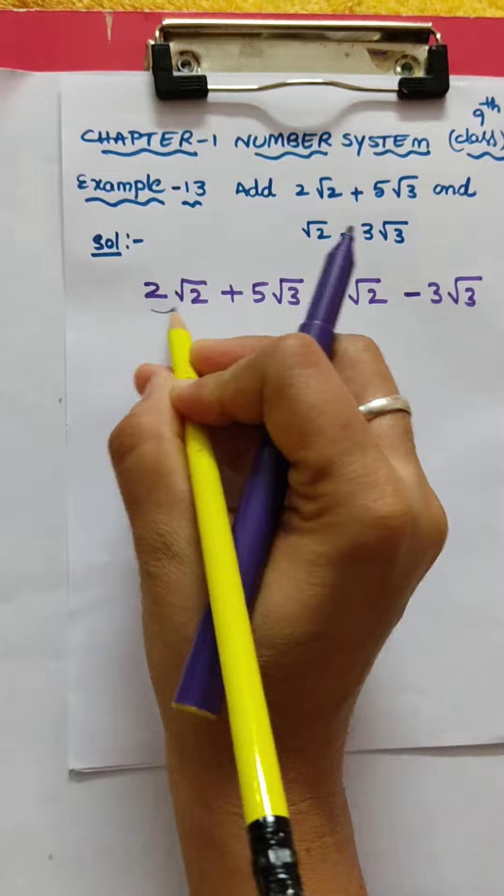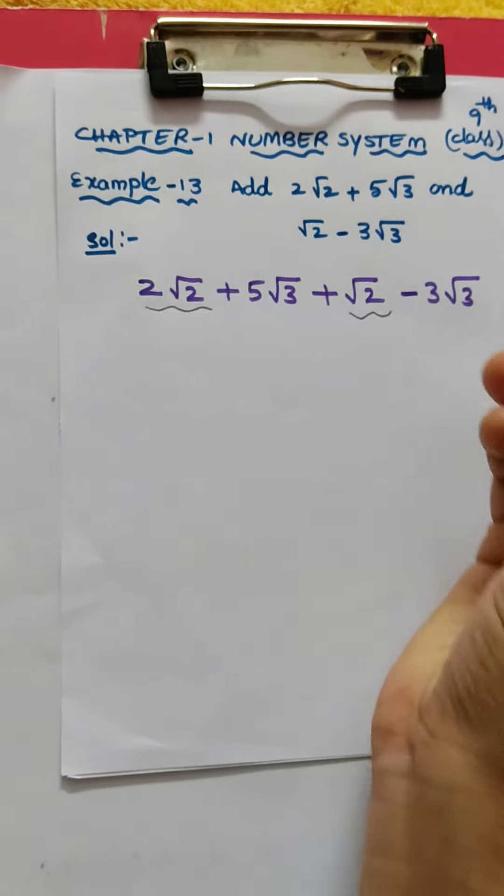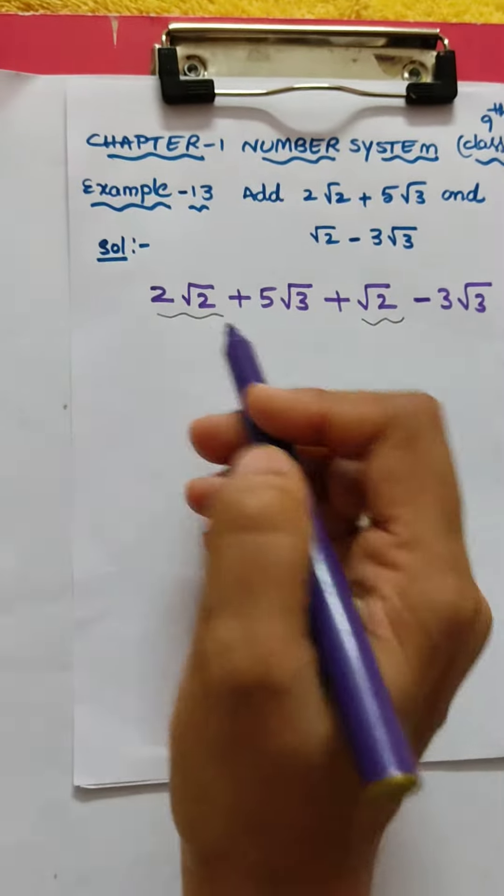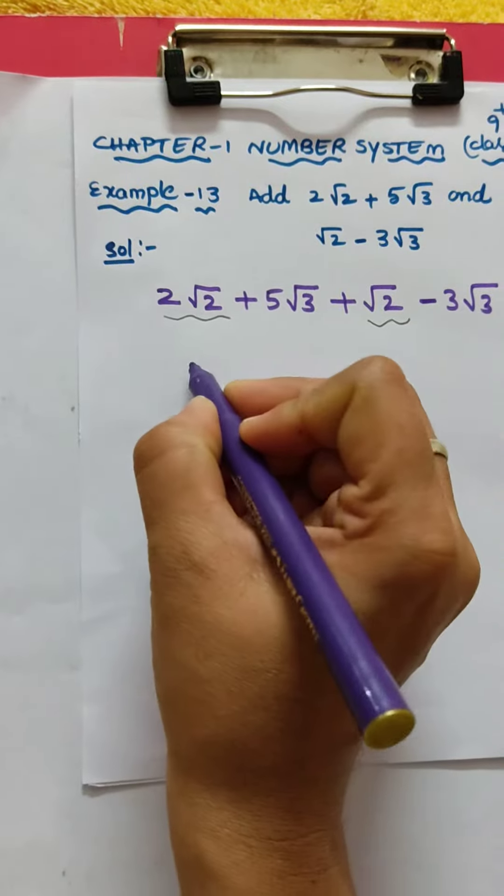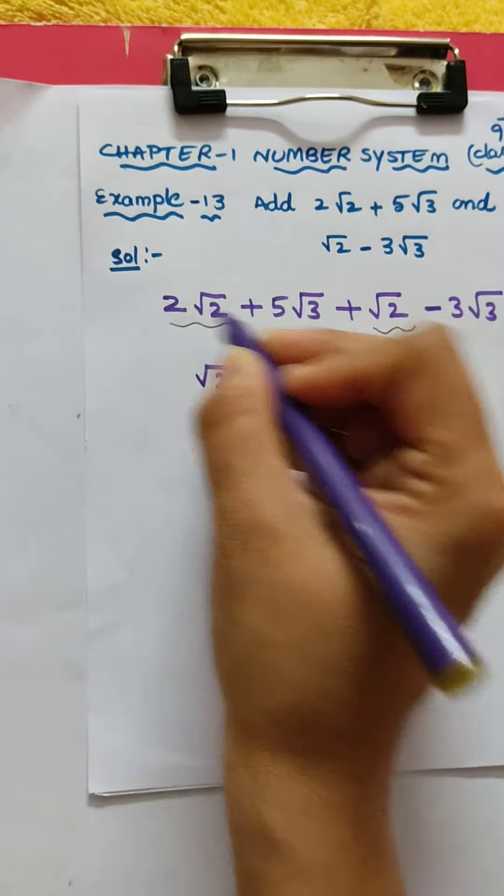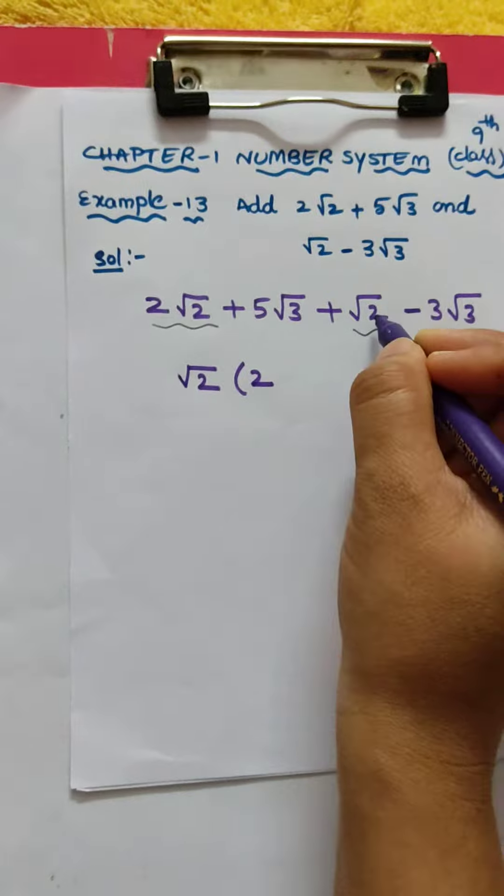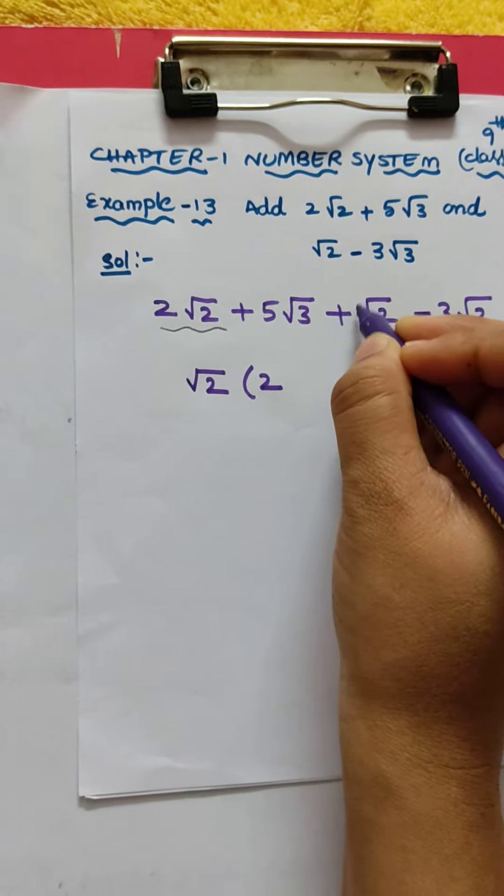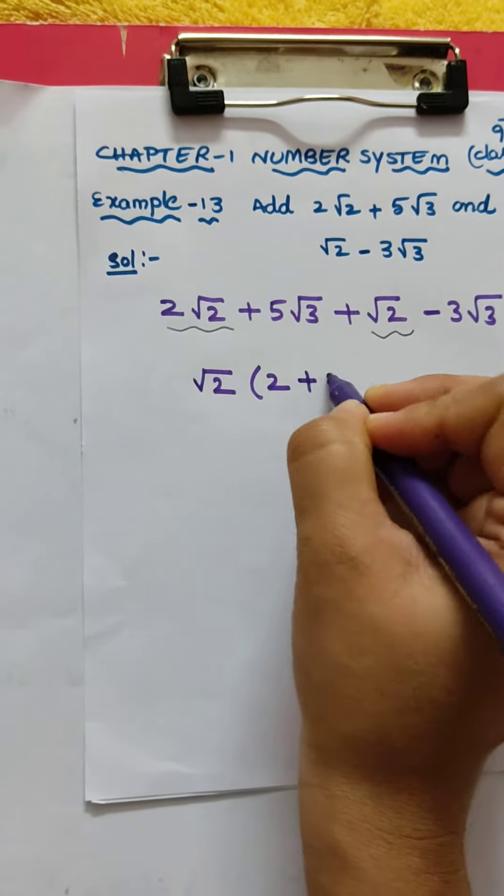See here, which is common? √2 is common, so I am taking √2. If we take √2 common, what is the left out part? 2. Here if you take √2, nothing is there, in the sense 1, so plus 1.